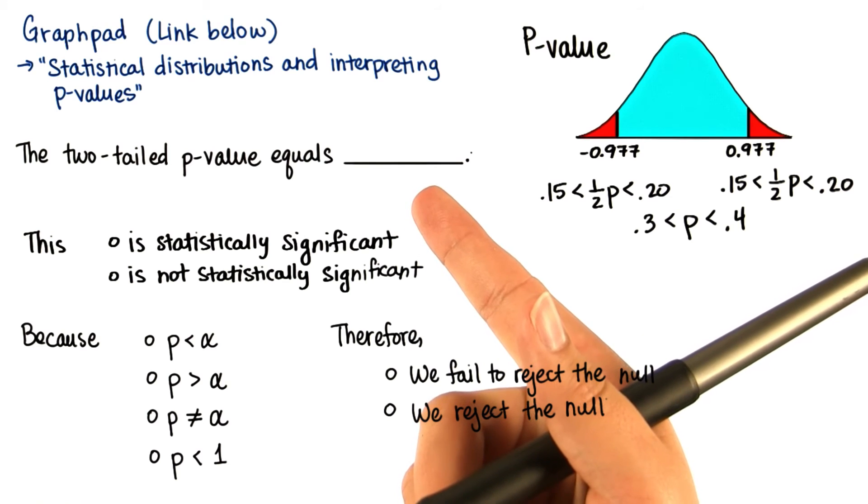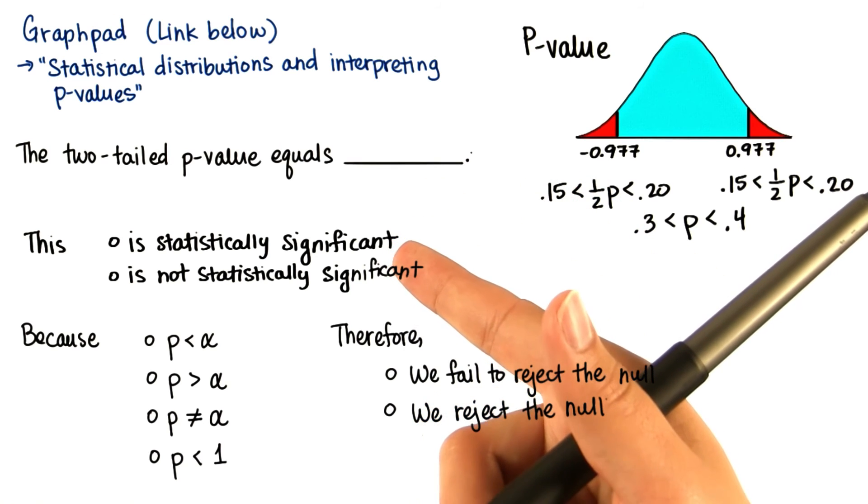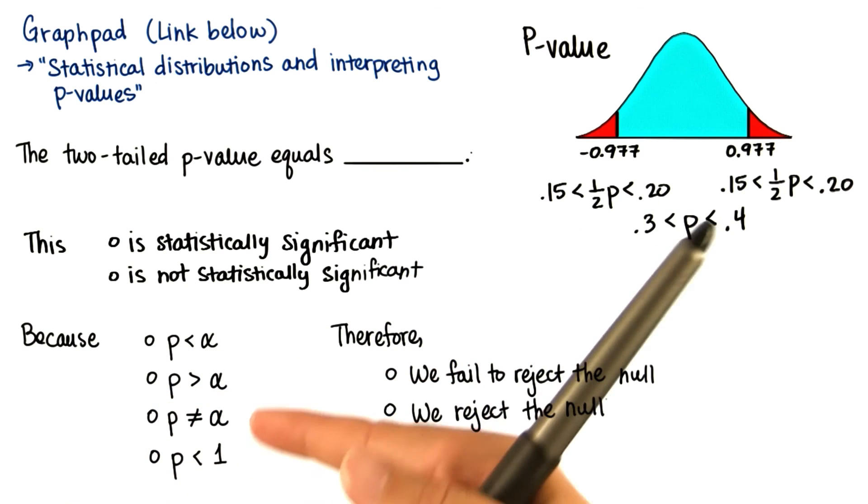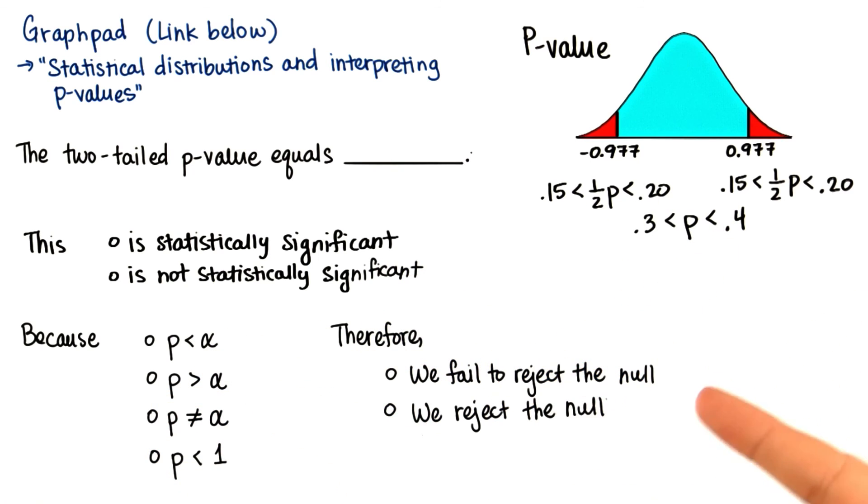What did you get for the two-tailed p-value? Is this statistically significant or not statistically significant? And that's because of which of these options? Therefore, what's our decision?